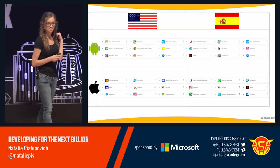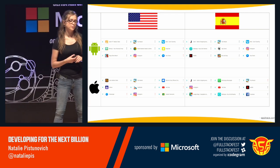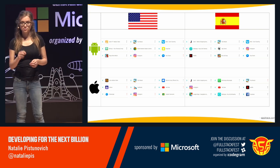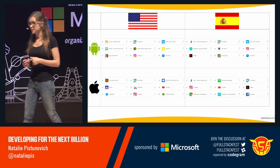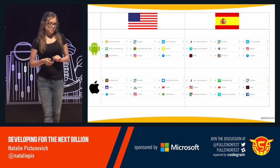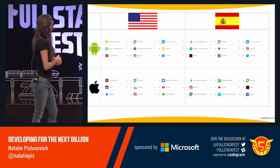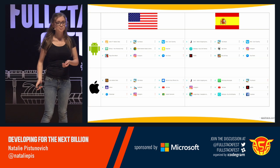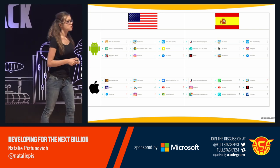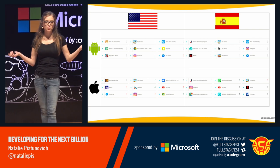I took data from the website apptrace.com showing the top downloaded free apps this week for the US and Spain, across Google Play and the App Store. US people love an app called Zello Walkie Talkie, plus the usual YouTube, Instagram, Snapchat. Nothing too surprising. Spanish people seem to love Joom for shopping, plus Netflix, Instagram, YouTube — no big surprises there either.